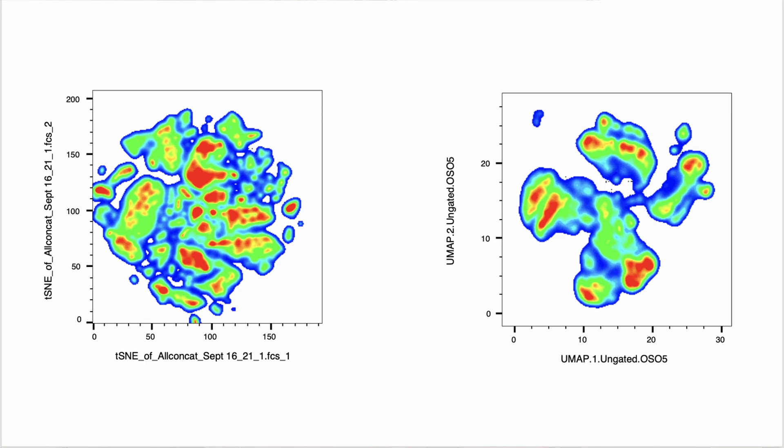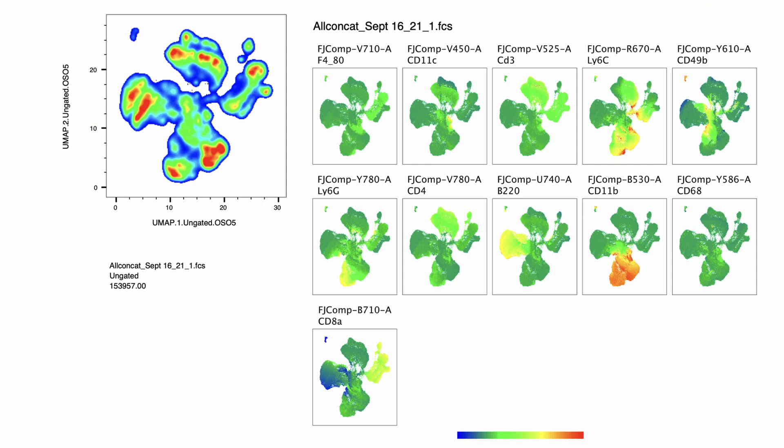So essentially what you're looking at here is a t-SNE and a UMAP of the same data. You can see they look very different, but you read them more or less the same way where any of these little islands represents a discrete type of cell. And cells in that island all have a similar expression pattern that are different from cells in other islands.